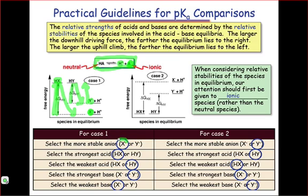So as a result, the more stable anion, just by looking at the energy diagram, is clearly X-. The strongest acid is Hx because of the downhill fall from Hx to X-. The strongest base is Y-, because from Y- up to Hy is the smaller uphill climb, and the weakest base would thus be X-.